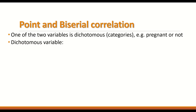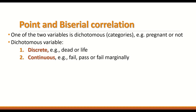A dichotomous variable can be discrete or continuous. A discrete dichotomous variable includes examples like dead or alive, pregnant or not, yes or no. A continuous dichotomous variable is one such as fail or pass, where there is an underlying continuity — for example, failing marginally. That is why it is called a continuous dichotomous variable.